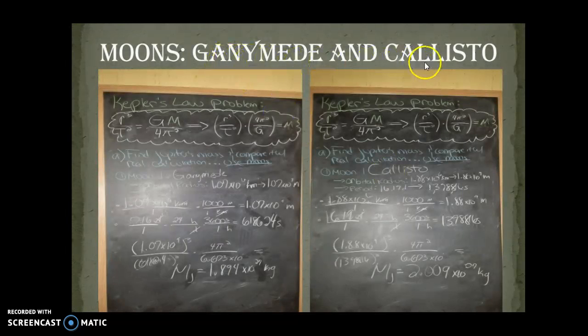This is Ganymede and Callisto. Did the same thing, different conversions of course. Still got different masses, but again that's why I decided to take an average of every one of them and then decide what the mass of Jupiter from my calculations would be compared to the original.